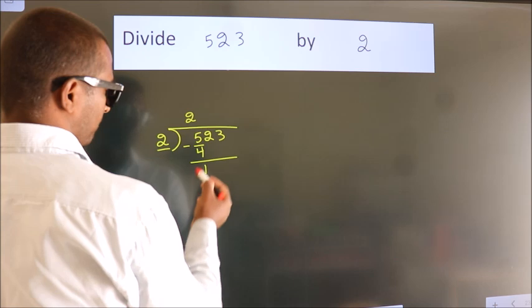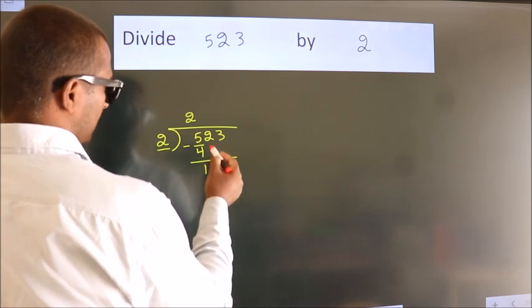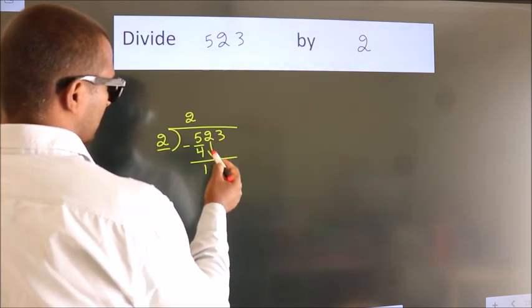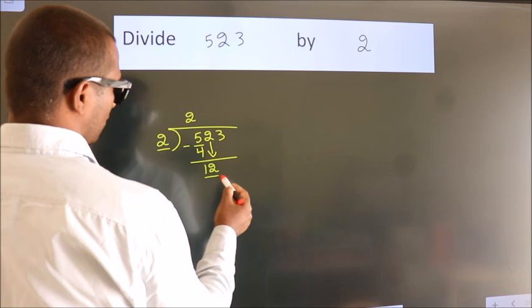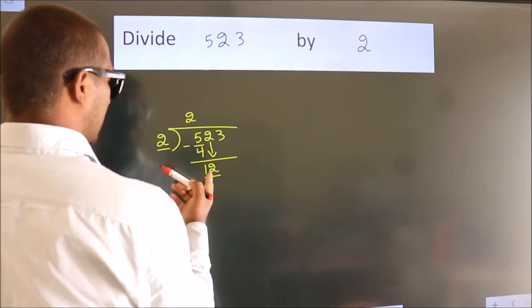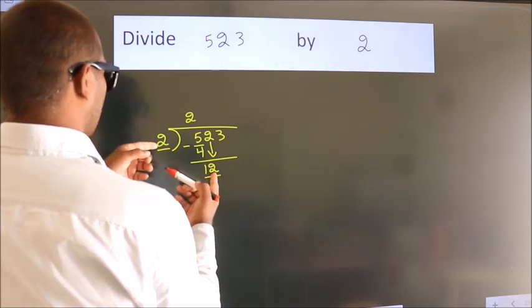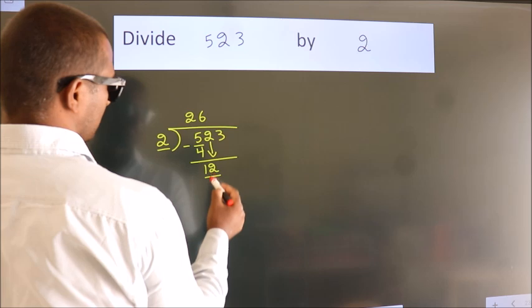We get 1. After this, bring down the beside number. So, 2 down. So, 12. When do we get 12? In 2 table. 2 6 12.